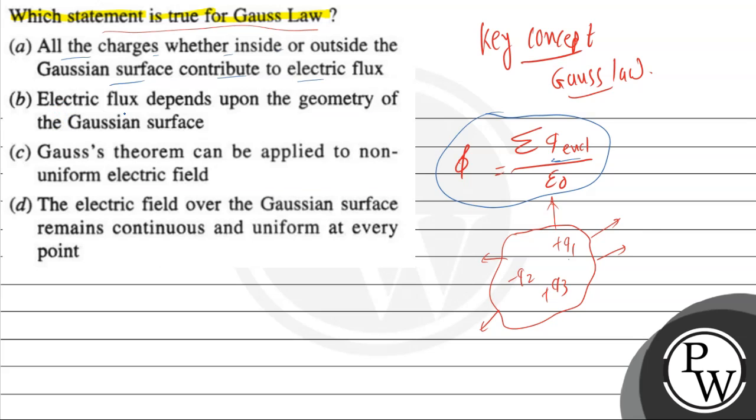Now second, electric flux depends upon the geometry of Gauss surface. Now it depends on the geometry of Gauss surface—it depends on which shape of geometry, whether it is triangle, square, or randomly whatever the shape. So option B is not correct.